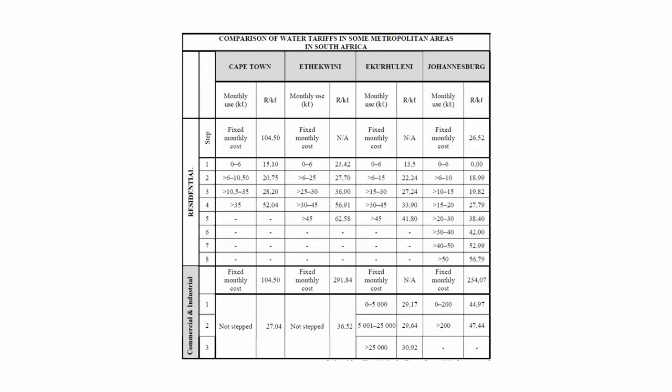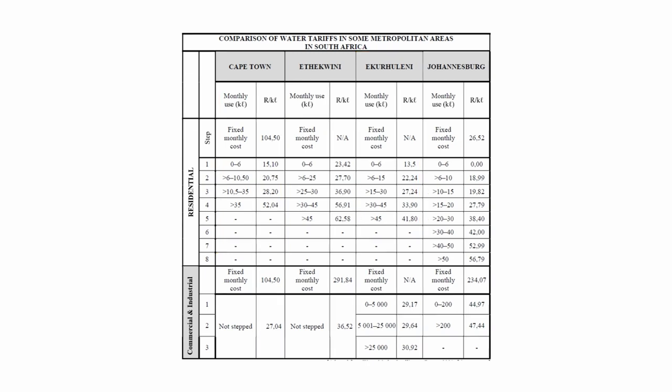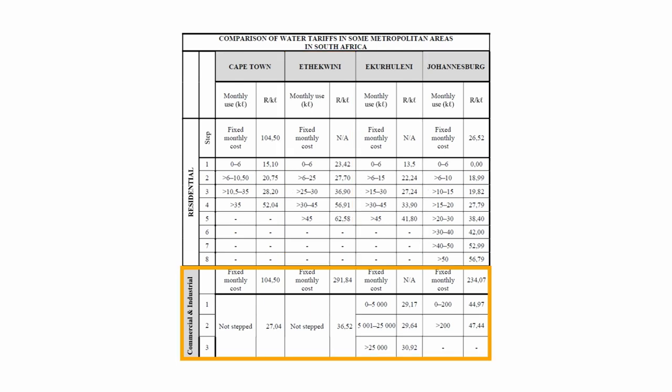Analysing the table in Annexure A, we see that we will be using two parts of the table. One part compares the water tariffs in Ethikwini and Johannesburg, and another part covers water tariffs for commercial and industrial entities. Since John will be using water as a resident, those parts of the table will not be needed.